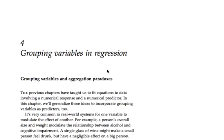Specifically, we will start thinking about multiple predictors in a regression model — that is, many different X's that can all be used to forecast the same Y, the same outcome variable. In this chapter, the special case we'll consider is when only one of those X variables, those predictors, is a numerical variable, and the rest are all categorical.